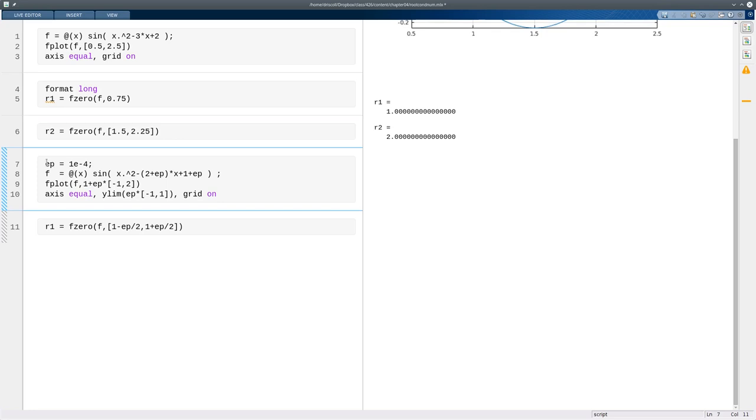Here I'm changing the function a little bit. Epsilon is a fairly small number. And now this part inside the parentheses here is the product of x minus 1 and x minus the quantity 1 plus epsilon. So it has two roots that are separated by this amount, 10 to the minus 4, fairly close together.